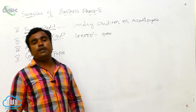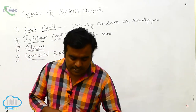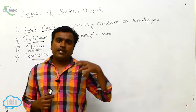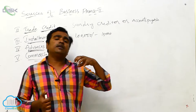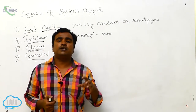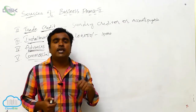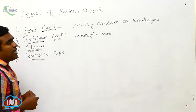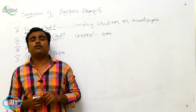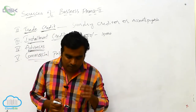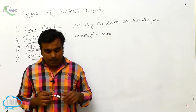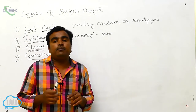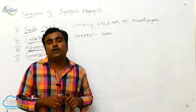When it comes to commercial paper, it is considered one of the very popular sources and in the 90s it emerged as a short-term finance. Commercial paper is an unsecured promissory note. We can raise funds in a short period and it can be issued between 90 days to 364 days.